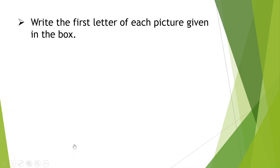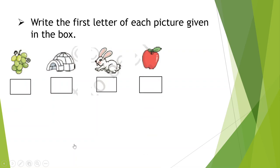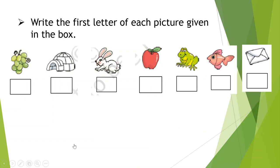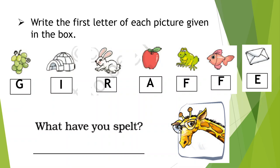Write the first letter of each picture given in the box. Let's see which pictures these are: Grapes, Igloo, Rabbit, Apple, Frog, Fish. So the first letters we will be writing: G for Grapes, I for Igloo, R for Rabbit, A for Apple, F for Frog, F for Fish, E for Envelope. Can you find which word is G-I-R-A-F-F-E? Yes, correct — it is giraffe.